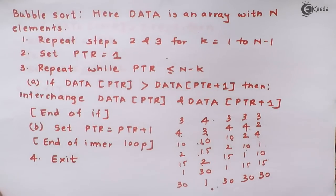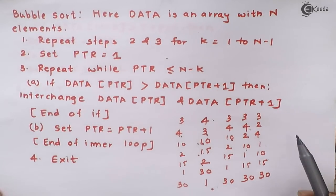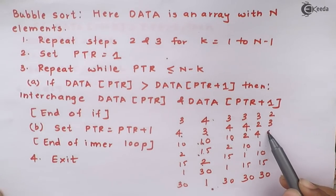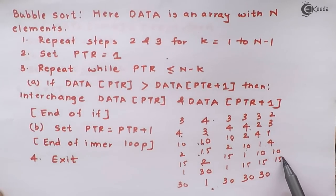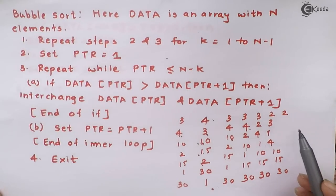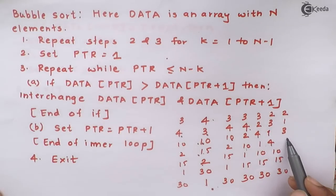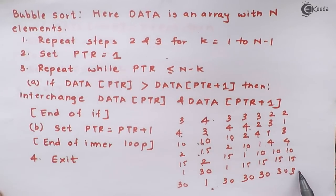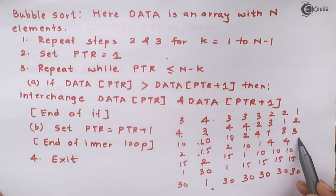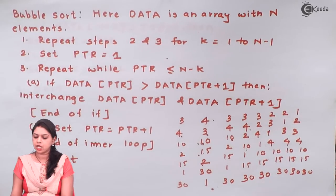One more iteration: 2 and 3 — 2 will go up and 3 will come down. Then 1 will go up and 4 will come down, and the rest of the elements remain as they are. After one more iteration we have 2, 1, 3, 4, 10, 15, 13. At last we get the fully sorted list: 1, 2, 3, 4, 10, 15, and 13.